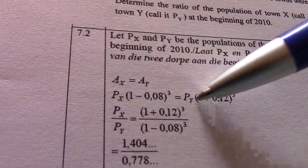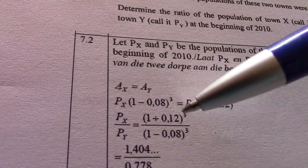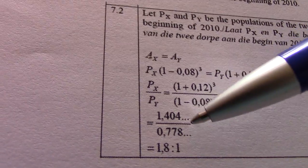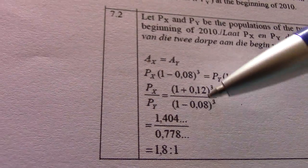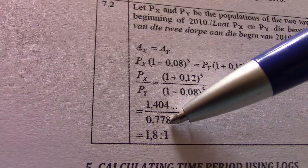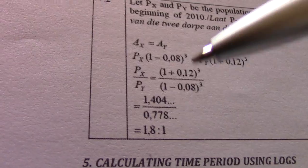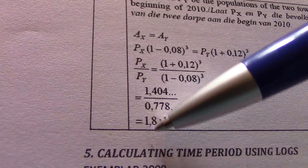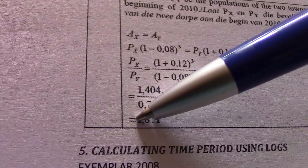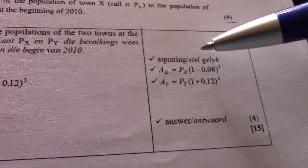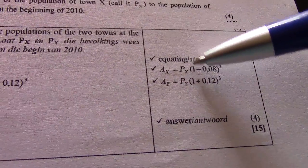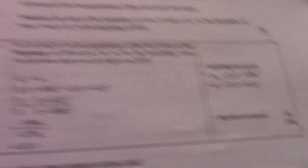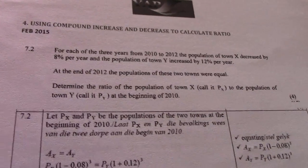Now as a ratio, PX divided by PY equals (1 plus 0.12)^3 divided by (1 minus 0.08)^3, which gives approximately 1.404 divided by 0.778. Simplifying: 0.778 divided by itself gives 1, and 1.404 divided by 0.778 gives approximately 1.8. So these two towns are in the ratio 1.8 to 1. That's 1 mark for equating them, 1 mark for PX times (1 minus 0.08)^3 for town X, same for town Y, and 1 mark for the answer.